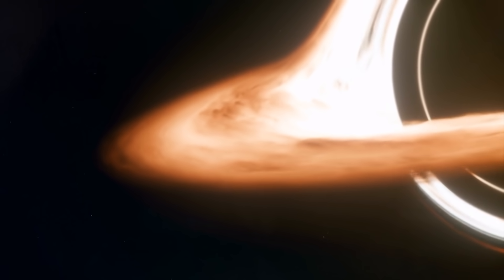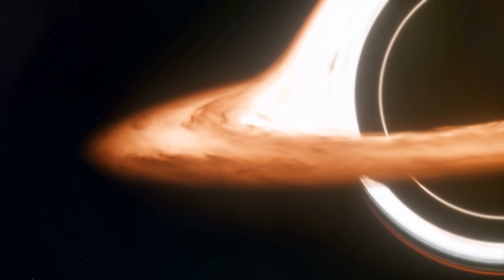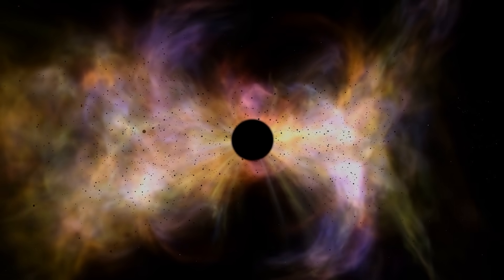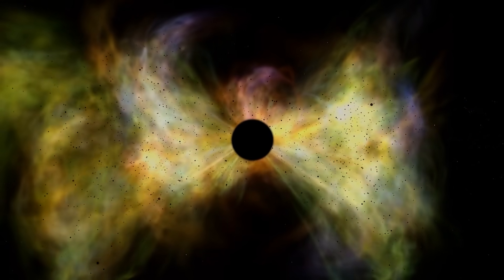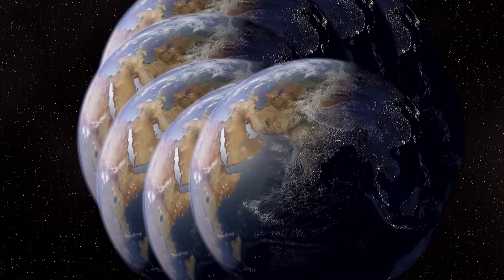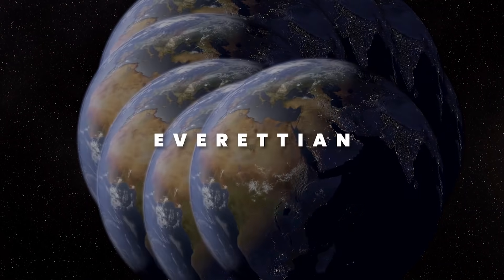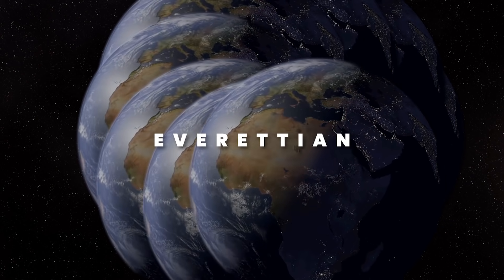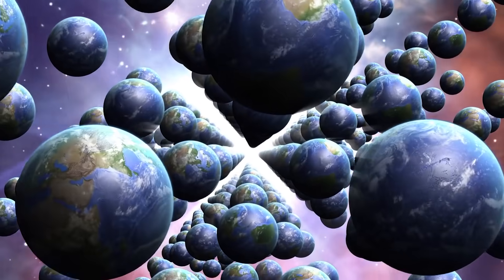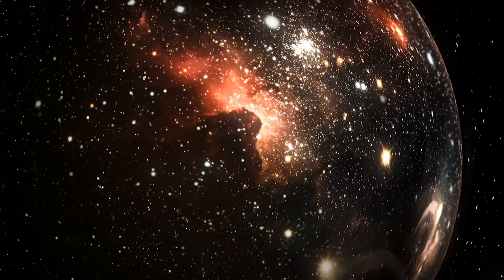Black holes are a major quandary when it comes to our understanding of physics because either they can destroy information, which contradicts what we know about quantum mechanics, or they disregard Einstein's theory of relativity. Now scientists are applying the many-worlds theory, now called Everettian, to the black hole information problem. By using the many-worlds interpretation, scientists are finding new ways to answer mysterious questions about black holes.